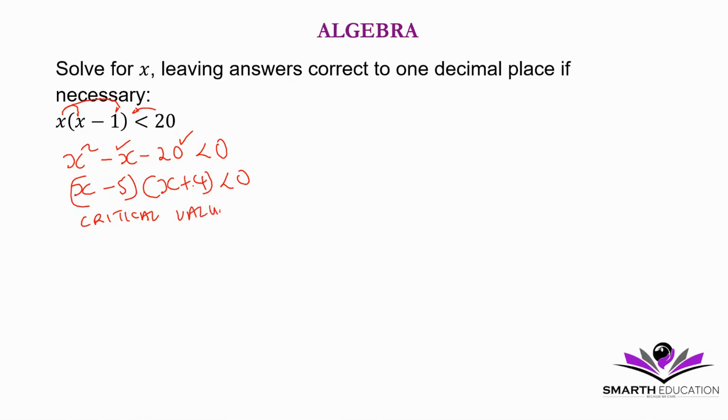Critical values. x minus 5 is equal to 0 or x plus 4 is equal to 0. So our critical values are x is equal to 5 or x is equal to negative 4. Here, take note, these are not the solutions. It's just the critical values.